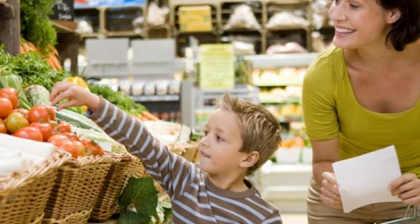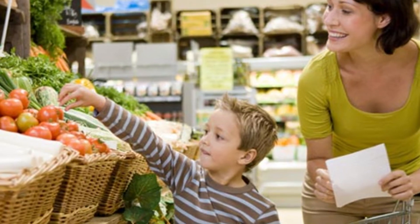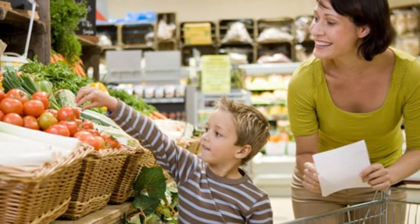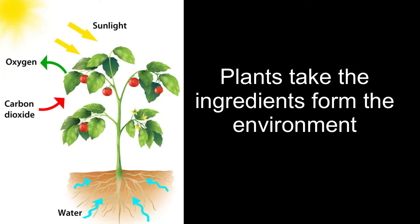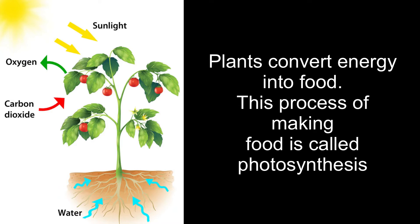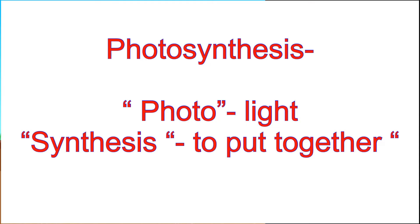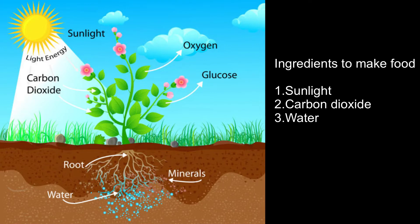To cook food we need different ingredients which we sometimes have at our homes or we buy from the supermarket. Plants take the ingredients from the environment and convert energy into food. This process is called photosynthesis. If we break down the word photosynthesis into two words, photo means light and synthesis means to put together.